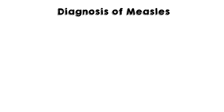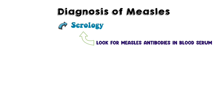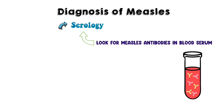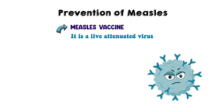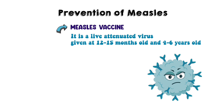Measles is usually diagnosed clinically; however, it can also be done through serology — simply look for measles antibodies. For prevention, the measles vaccine is used. It is a live attenuated virus vaccine given at 12 to 15 months of age, and again at four to six years of age.